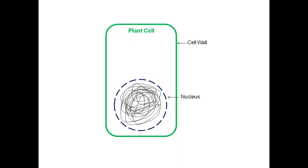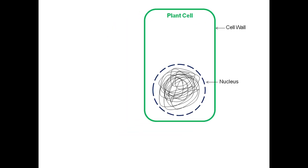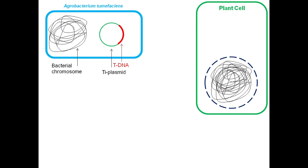Now, this is the basic structure of a plant cell showing only the cell wall and nucleus containing DNA. And this is the basic structure of Agrobacterium tumefaciens showing its chromosome and Ti plasmid. The Ti plasmid contains a fragment of DNA called T-DNA, shown in red, which is mainly responsible for crown gall formation.